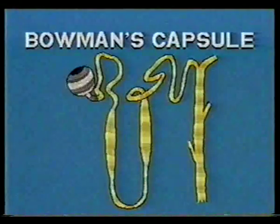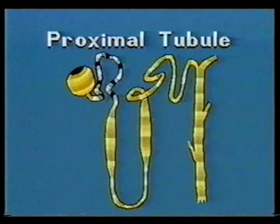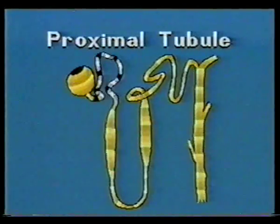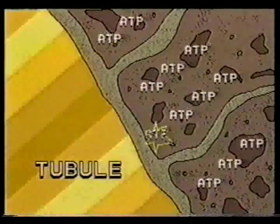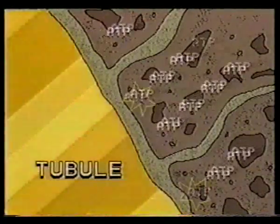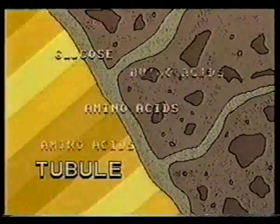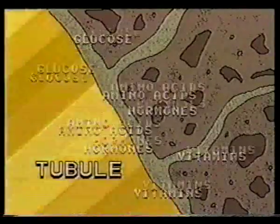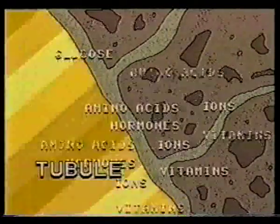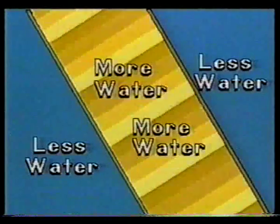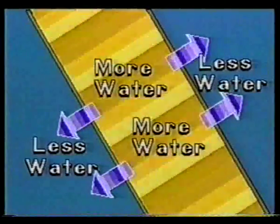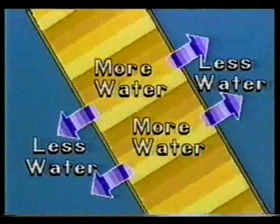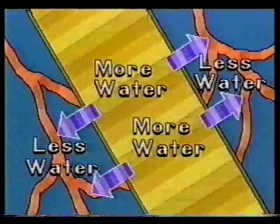This work begins in the proximal tubule. Here, the cells lining the tubule walls use the energy of ATP molecules to actively transport glucose, amino acids, hormones, vitamins, and ions out of the tubule. Since the filtrate in the tubule contains more water than is in the surrounding cells, osmosis carries water out of the tubule and into the cells that line it. In the proximal tubule, about 80% of the filtrate is returned to blood capillaries.